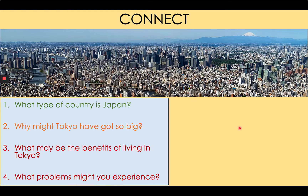What problems might you experience if you lived in a big city like Tokyo? Air pollution might be higher from all the vehicles. It's more stressful because of the sheer number of people. House prices are really expensive because everyone wants to live there. Crime might also be higher than in the countryside. These are all elements of living in Tokyo that might not be so good.